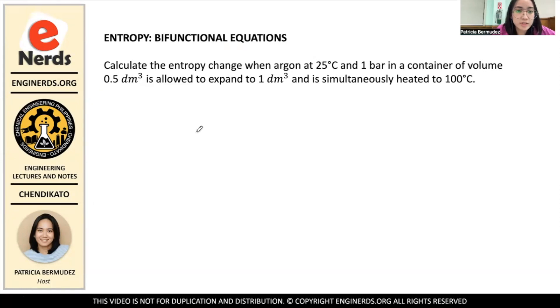So our equations for change in entropy: First is that the change in entropy, when it is a function of temperature and volume, equals N·Cv·ln(T2/T1) plus N·R·ln(V2/V1).